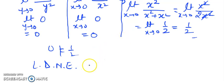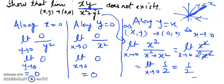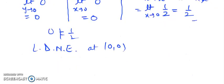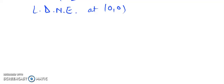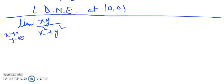So this path gives a different answer, meaning the limit does not exist at the origin. This function is not the only case. It is not required that you always try x = 0, then y = 0, then proceed. There is another way: I will take the same question — limit of xy/(x² + y²) as (x, y) → (0, 0) — and solve it in one step.